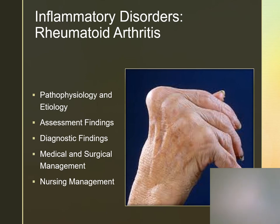Rheumatoid arthritis is an autoimmune system inflammatory disorder of the connective tissue and joints, but primarily in the synovial tissue. It may also affect other body systems such as the eyes, skin, heart, lungs, kidneys, and blood vessels. It is the most common form of autoimmune arthritis.